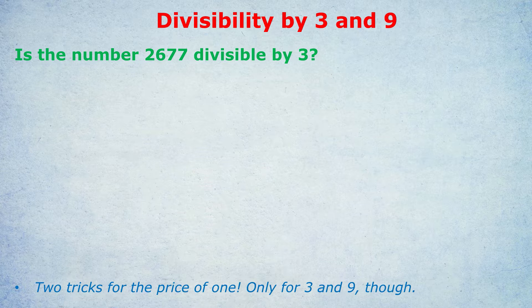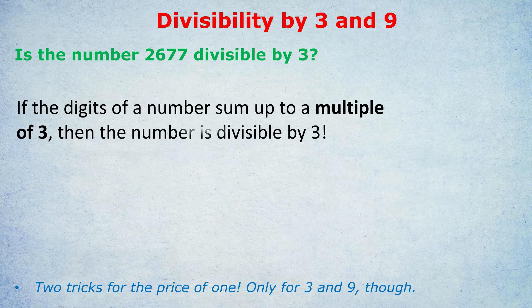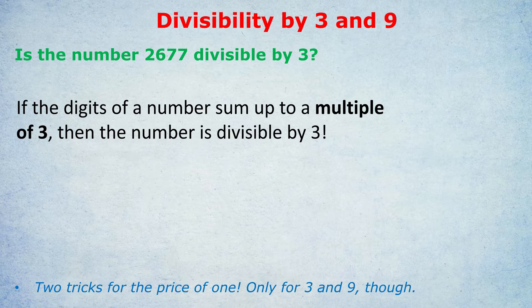How do we find out? What you need to do is sum up the digits of the number and check whether that sum is a multiple of 3. It doesn't have to be 3 itself, just a multiple of 3. If that sum of the digits is a multiple of 3, then the original number is divisible by 3.